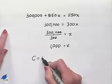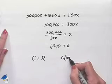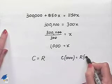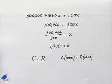And so 1,000 computers must be produced in order for our cost to equal our revenue. We can write that as C of 1,000 equals R of 1,000, and that tells us that at this point our profit would equal zero.